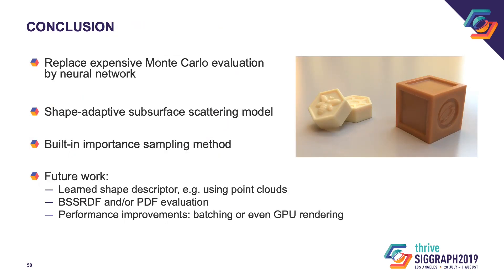In conclusion, our method replaces an expensive Monte Carlo evaluation by a neural network, without having to replace the entire renderer. Our subsurface scattering model is shape-adaptive and has importance sampling built-in. For future work, it would be interesting to investigate learned shape descriptors, for example based on point clouds, as polynomial approximations are not always sufficient. Since our method is centered around sampling, it does not offer an efficient way to evaluate the BSSRDF value or the PDF of sampling — adding this would be useful for bidirectional light transport algorithms. Performance could also potentially be improved through batching or GPU rendering.